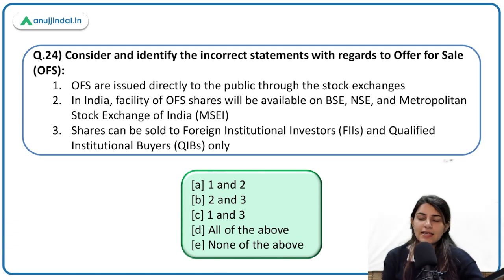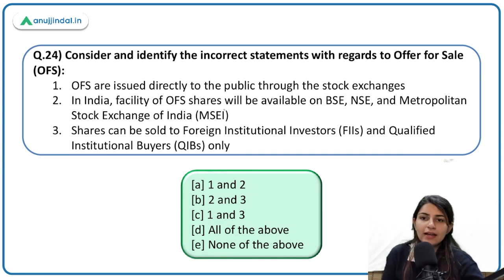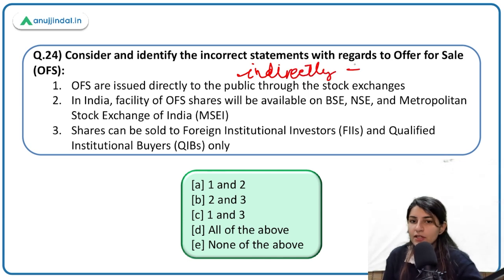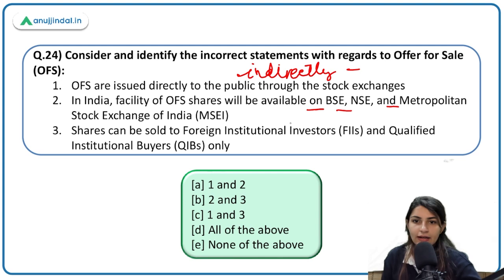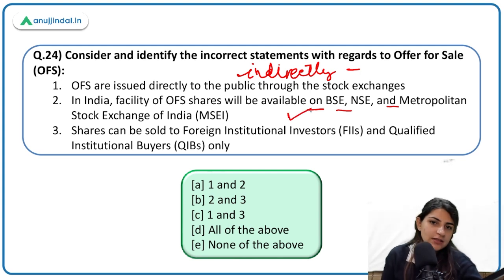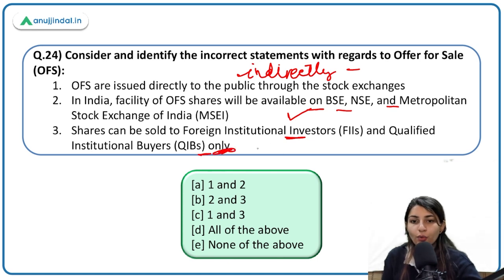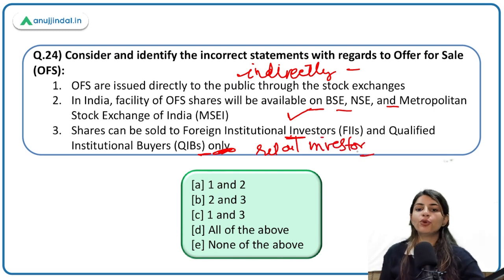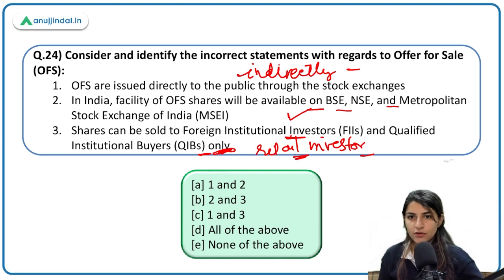Incorrect statements about offer for sale: OFS are issued directly to the public through stock exchanges — no, they are done indirectly through an intermediary. In India, facility for OFS shares is available on BSE, NSE, and Metropolitan Stock Exchange of India — correct. Shares can be sold to FII and QIBs only — no, they can be given to retail investors as well. OFS shares can be sold to foreign institutional investors, qualified institutional buyers, and retail investors.